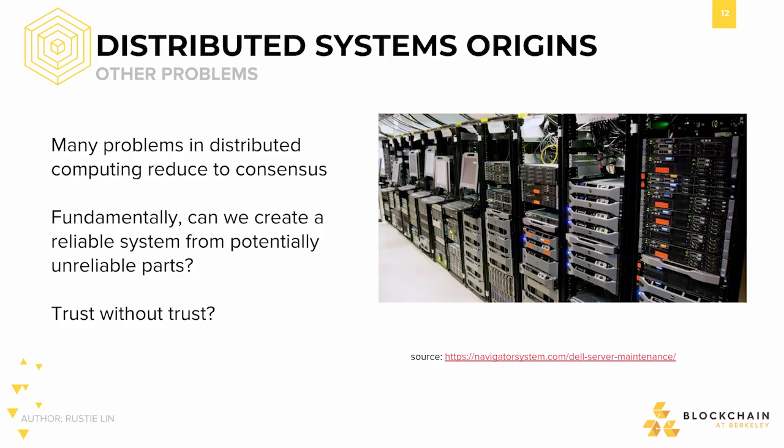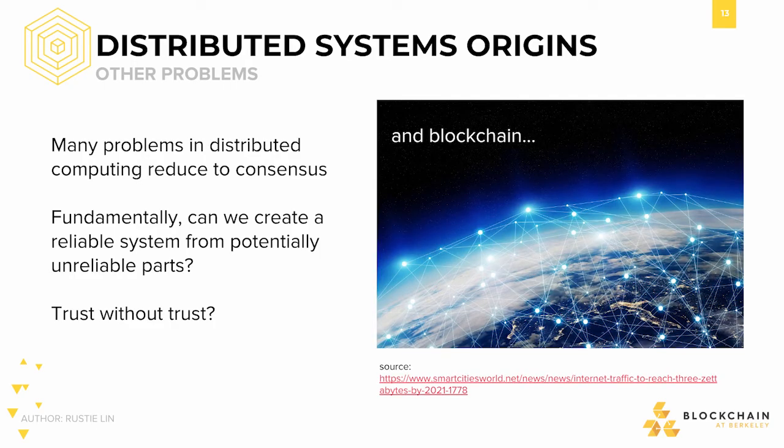Distributed systems and consensus is also studied in the context of big enterprise operations. Distributed lock servers, for example, ensure that no two processes can read or write to the same piece of data at the same time — a problem called mutual exclusion — thereby preventing potential corruption to important data. And finally, of course, the main focus of this course: the blockchain and distributed ledger revolution.